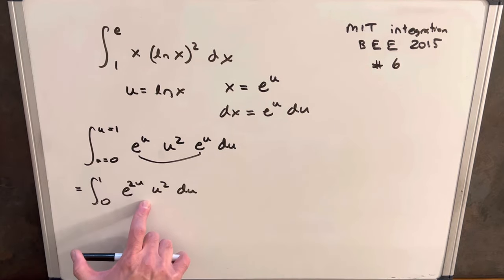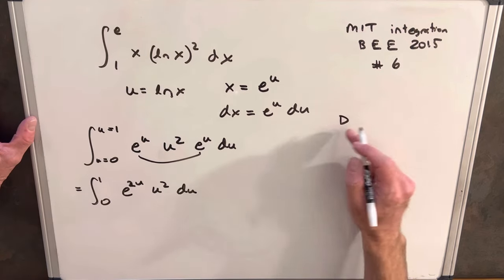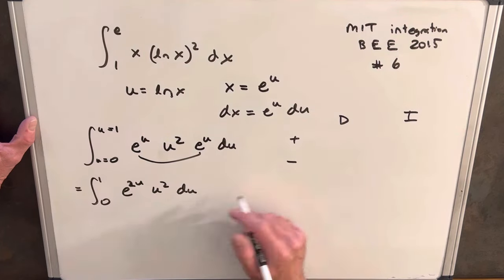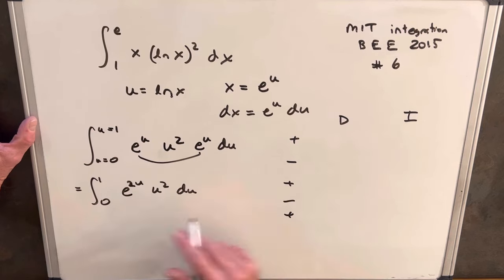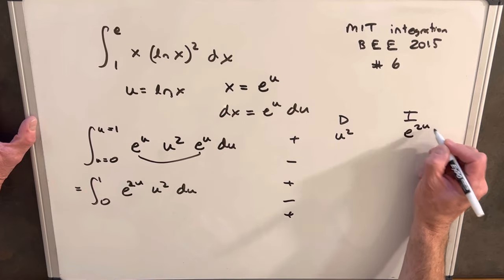Okay, this is set up perfectly for integration by parts and a good use of the DI method or tabular integration. So setting up our DI method, we'll have two columns, one to differentiate D and one to integrate I. And then we're going to have alternating signs. In this case, we're going to need quite a few rows.